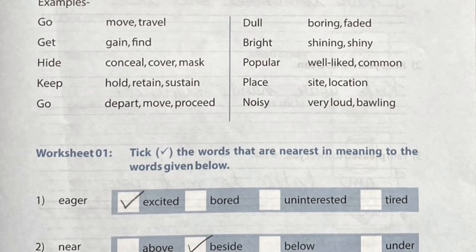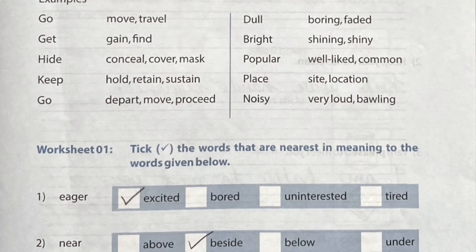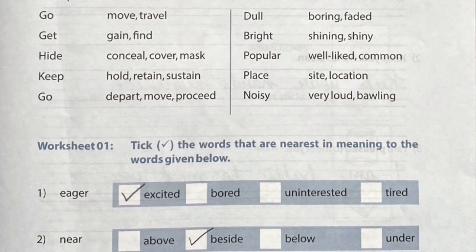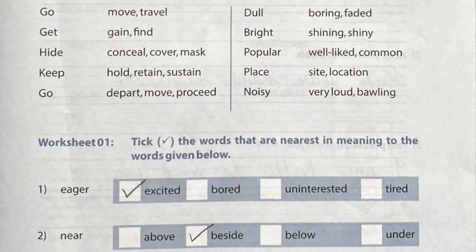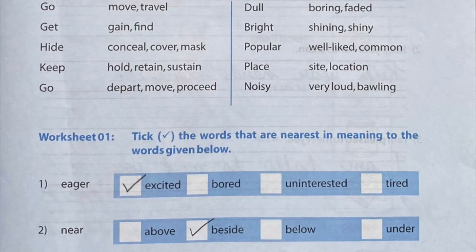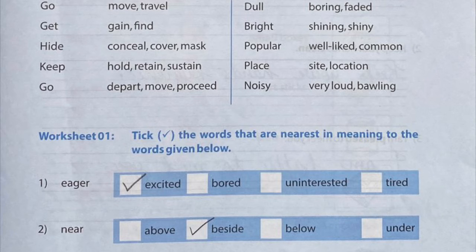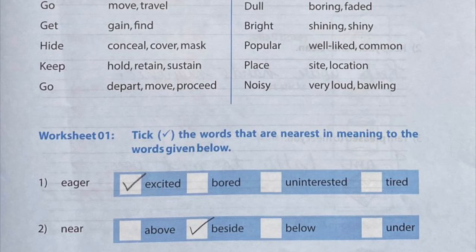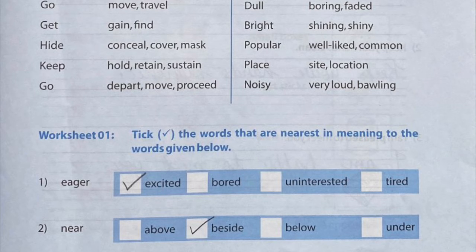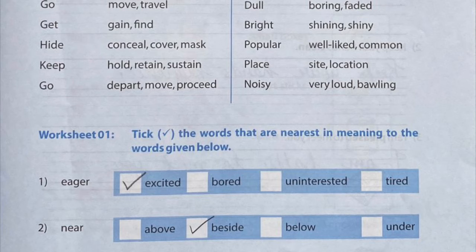I hope synonyms are clear now. In Worksheet 1, they have asked us to choose the word nearest in meaning to the words given below. We have to choose the word which is nearest to the given words. For example, the first word given is 'eager' — its nearest meaning is 'excited'. And 'nearest' — its closest meaning is 'beside'. Like that, we have to choose the correct option for each word.